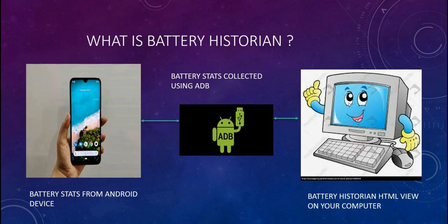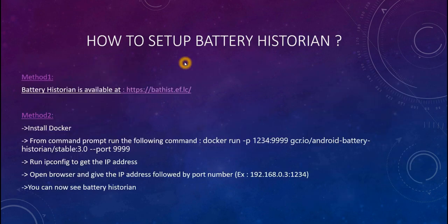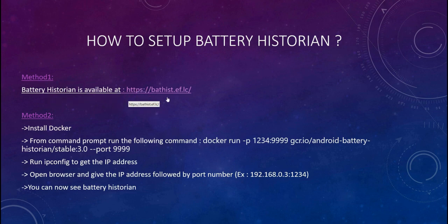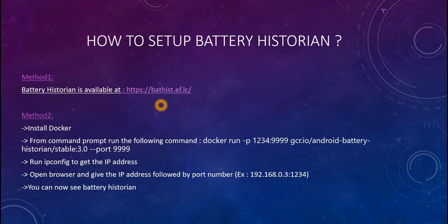We collect the bug report and give it as input to the web browser so that the HTML view is generated. Now, how to set up this Battery Historian tool? There are two methods. Method one: Battery Historian is already available online — you just go to the link, browse and input your bug report zip file, and submit to generate the report. However, I do not recommend this method because it is not good to feed your sensitive data into that browser.